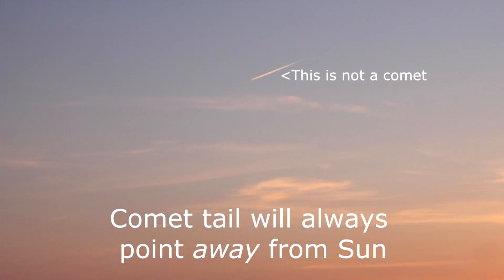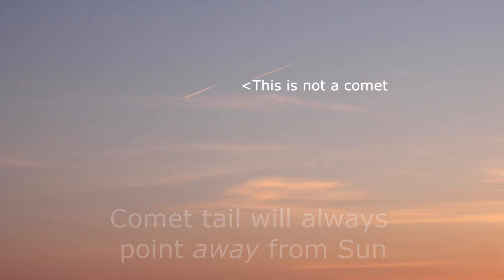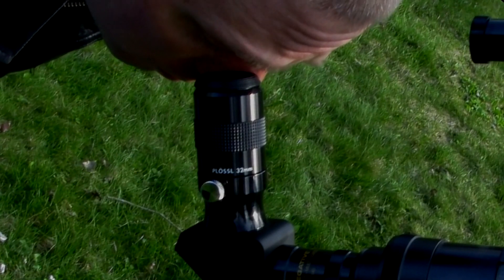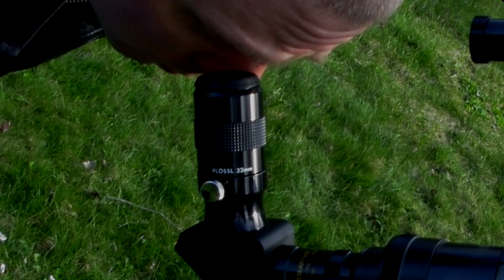If a comet moves anywhere except towards the horizon, it's probably a contrail. And if you use a telescope, be sure to use a long focal length eyepiece to give you the widest field of view.